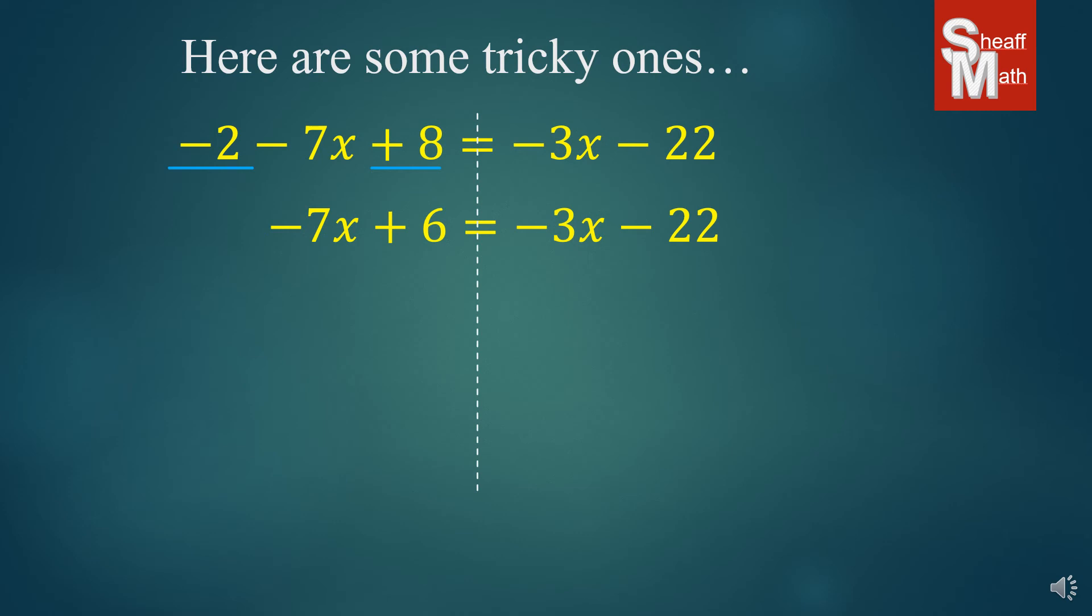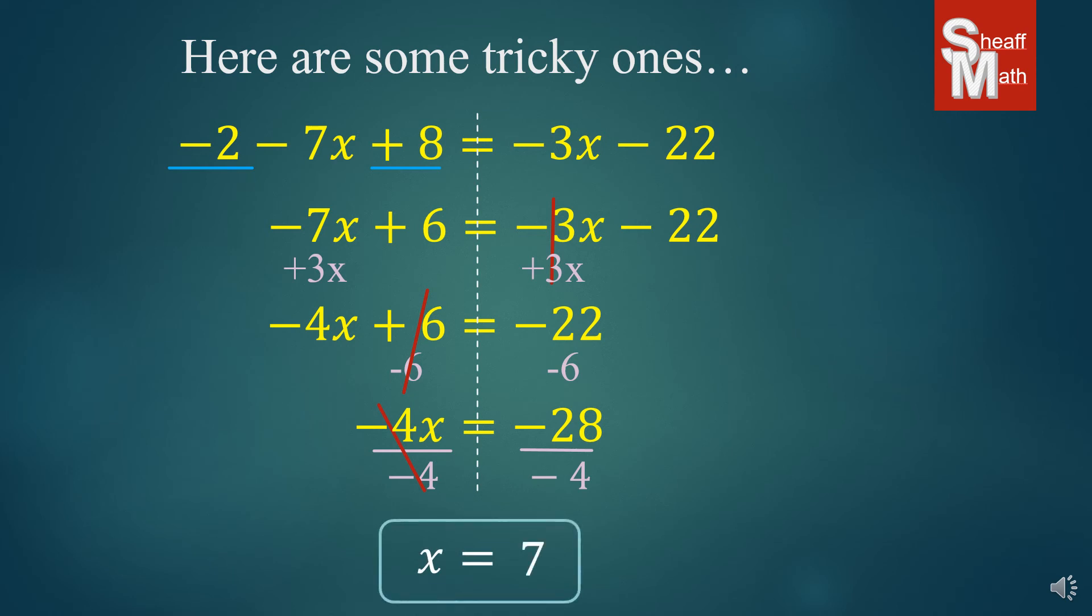So we're going to get the x's on the left. So we take care of that minus 3x, cancel it out, and we end up with negative 4x plus 6 equals negative 22. Then we subtract 6 leaving us negative 4x equals negative 28. We then divide by negative 4 and we end up with x equals positive 7. Not bad, huh?